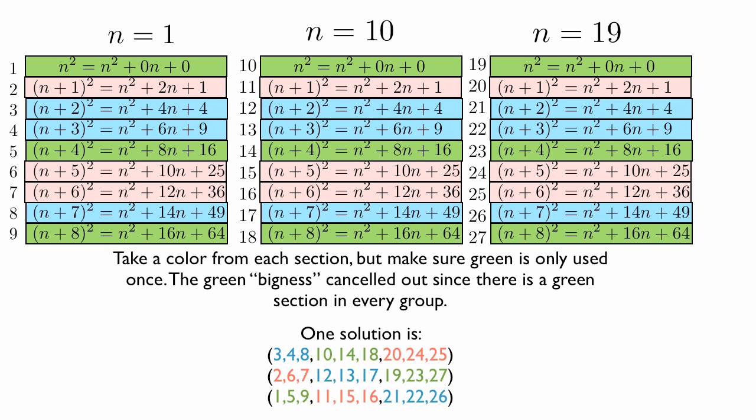So one solution is to take the blues from the first section. So we have 3, 4, and 8. That's like the number of the weights. It's actually 3 squared, 4 squared, and 8 squared. 10 squared, 14 squared, and 18 squared. And then 20 squared, 24 squared, 25 squared. Or, if the numbers just refer to the order. But if you take those, it's going to be equal to the next two solutions. 2, 6, 7, 12, 13, 17, 19, 23, 27.